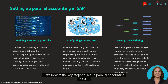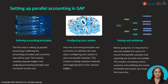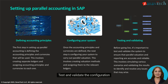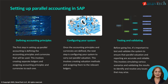Let's look at the key steps to set up parallel accounting in SAP. Define accounting principles and assign to ledgers. Configure valuation methods and currency translations. Set up account determination and posting rules. Test and validate the configuration. It's critical to involve both business and IT teams for requirements gathering and testing during this process.